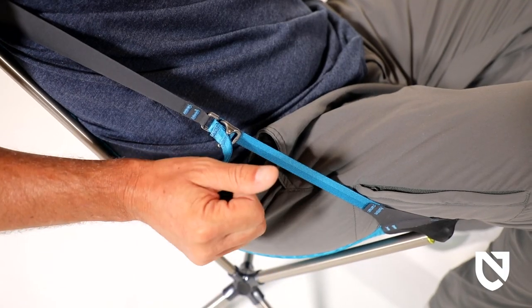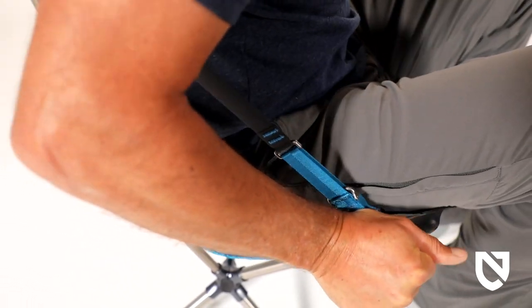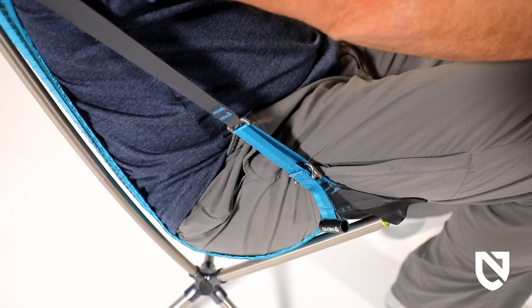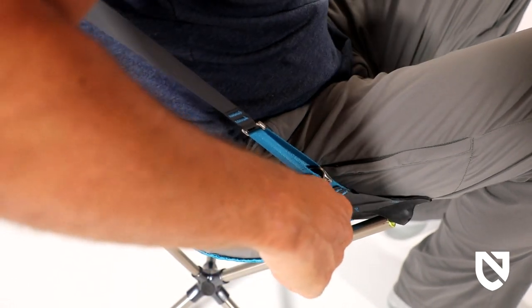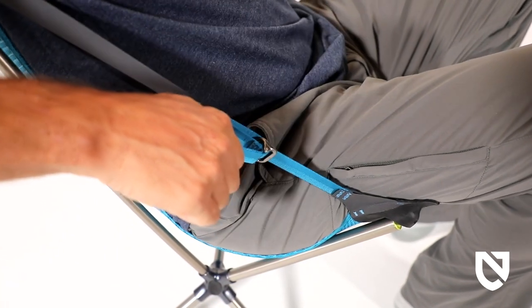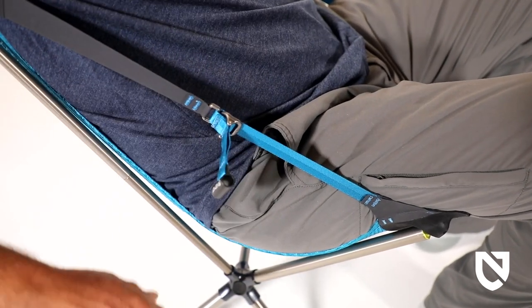Be sure to push and pull the handles in line with the webbing for smoothest operation. For the easiest pack up, start by sliding the recliner adjustment handles toward the back of the chair to the fully reclined position.